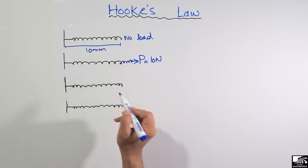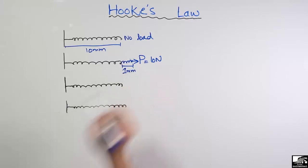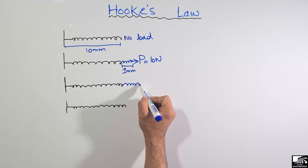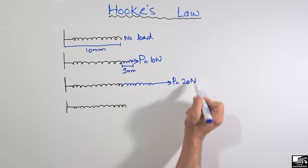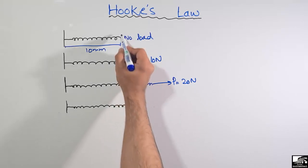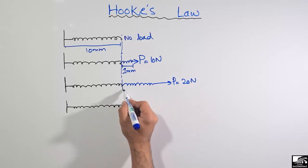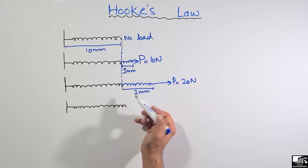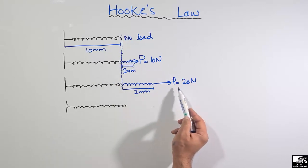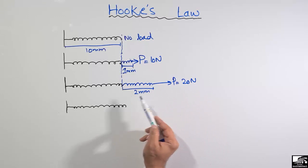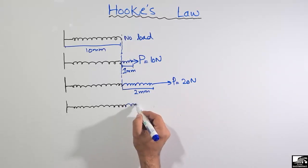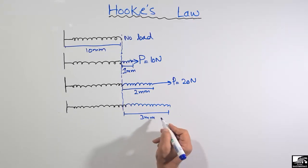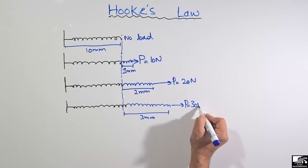The spring will increase in length by 1 millimeter under the 10 Newton load. If we further increase the load to 20 Newtons, it will show 2 millimeters of deformation. Similarly, if we increase the load to 30 Newtons, it will show 3 millimeters of deformation. So as the load increases, the deformation also increases proportionally.